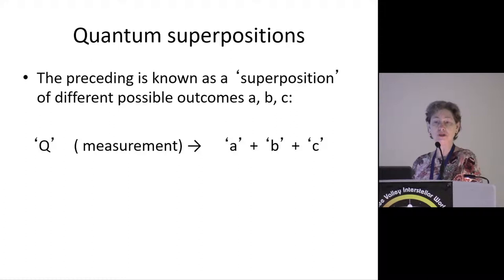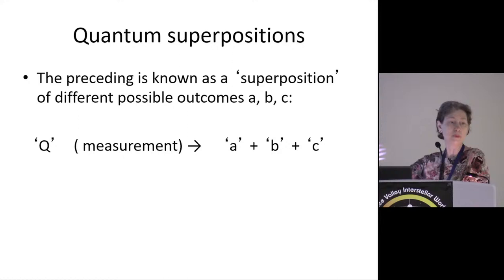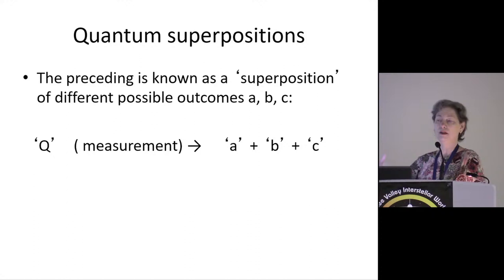This idea of having some uncertainty about where a particle is can be referred to as being in a superposition. The quantum state Q means that the system is in a superposition of different possible outcomes — boxes or places that we could detect the particle at. If we do a measurement on it, we just have this set of possible places, and quantum theory does not tell us where the particle actually is. It just gives us a superposition.